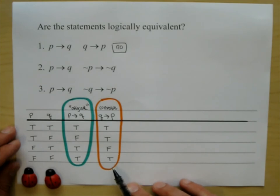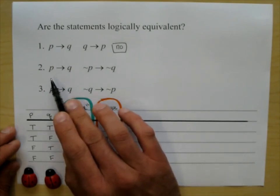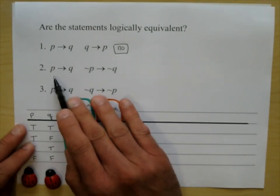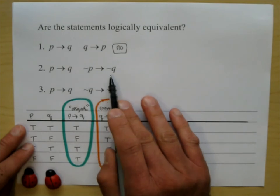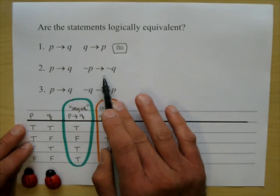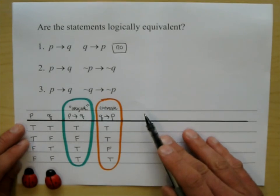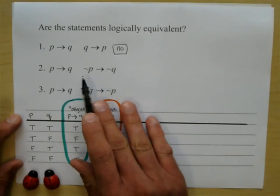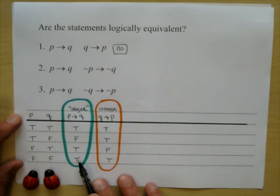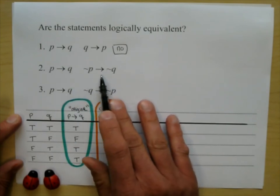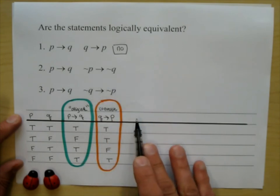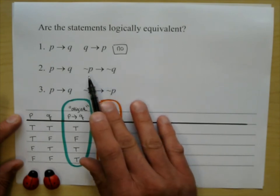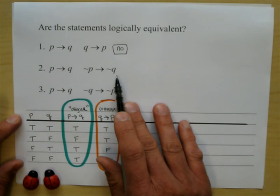Problem two: is 'if P then Q' equivalent to 'if not P then not Q'? We've got to put these on the same truth table. Since I already have 'if P then Q' in green, I'll add a not-P column and a not-Q column, then build 'not P then not Q.'